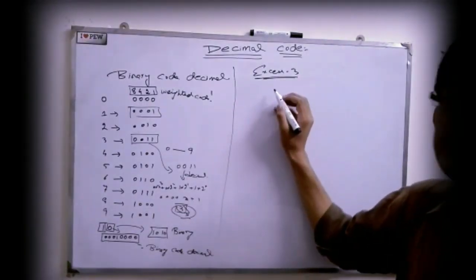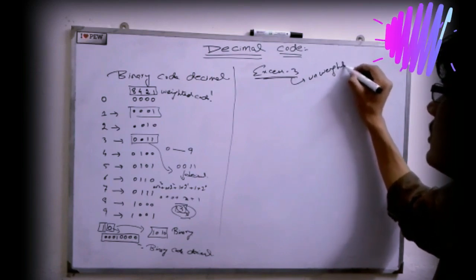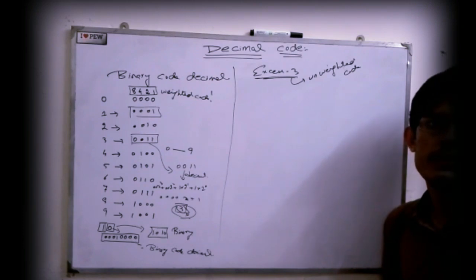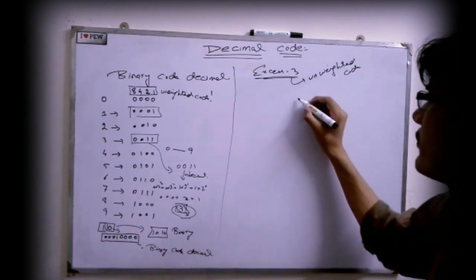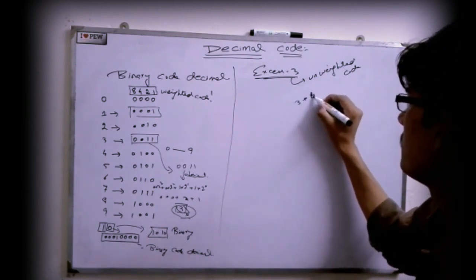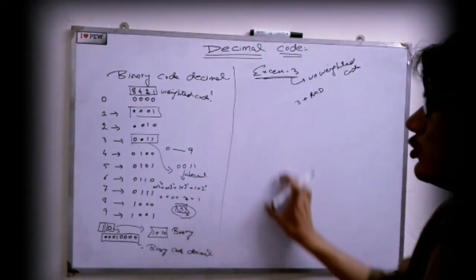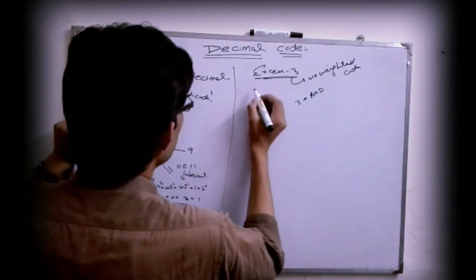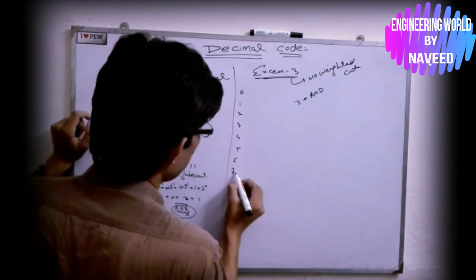XS-3 is the unrated code, used mostly by old computers. XS-3 is nothing but the addition of 3 with the BCD number. So when you add 3 with a BCD number, you get the XS-3 code. For digits 0, 1, 2, 3, 4, 5, 6, 7 — let's work through each one.